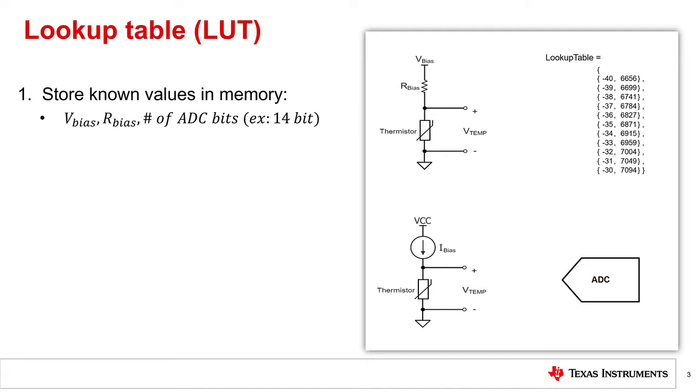If using a voltage divider circuit, you would save the voltage bias, bias resistor, and ADC bit number values in memory. Remember, it is important to use the most precise components possible in order to minimize their impact on the temperature error.